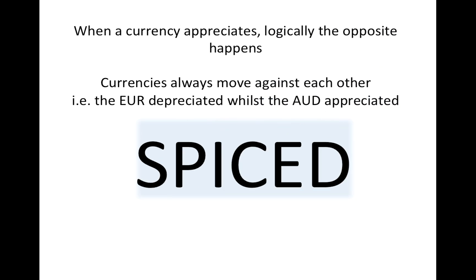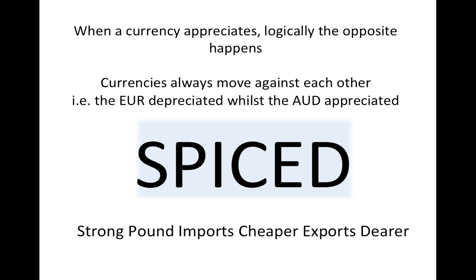We have an acronym in Britain called SPICED, which summarizes these effects. SPICED stands for: Strong Pound, Imports Cheaper, Exports Dearer. When the pound appreciates, imports become cheaper and exports become more expensive. The opposite happens when the pound depreciates — imports become more expensive and exports become cheaper. This acronym helps us remember these effects in exams when we are under pressure.